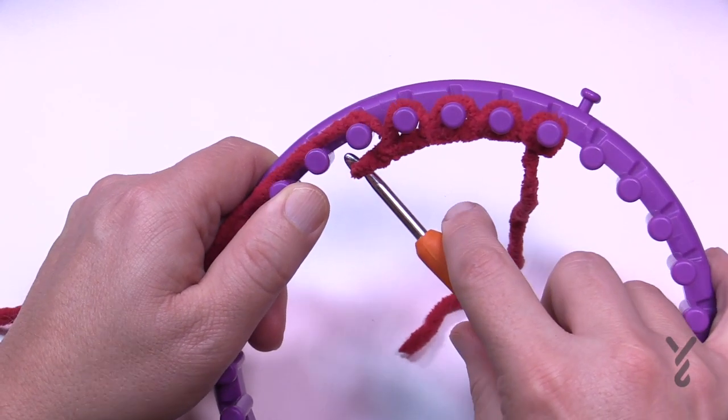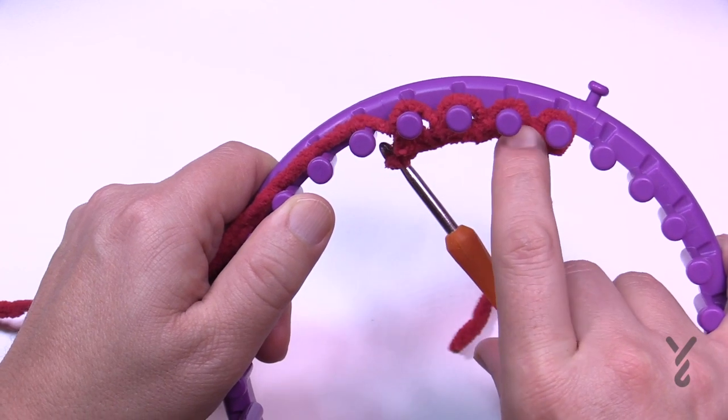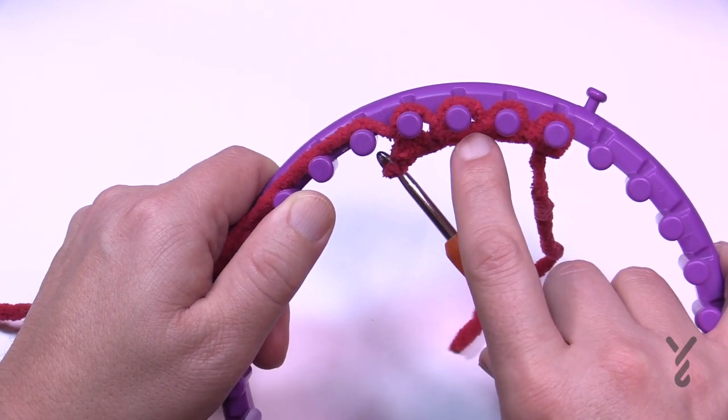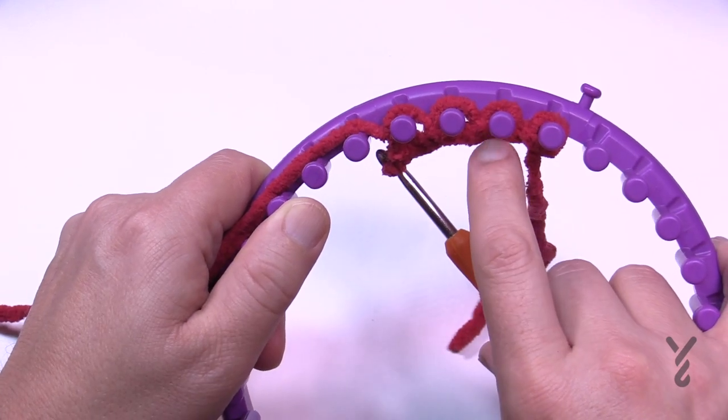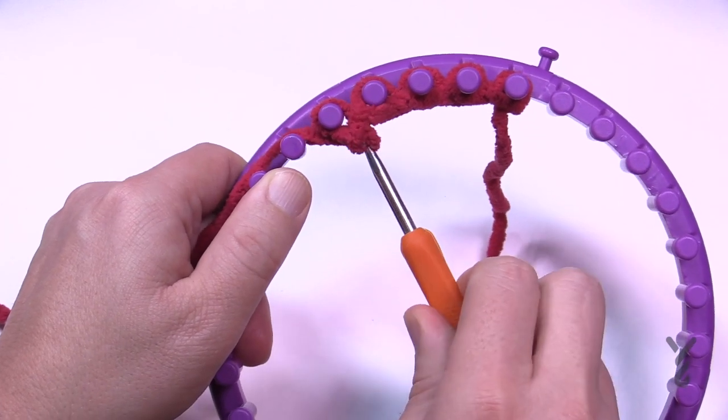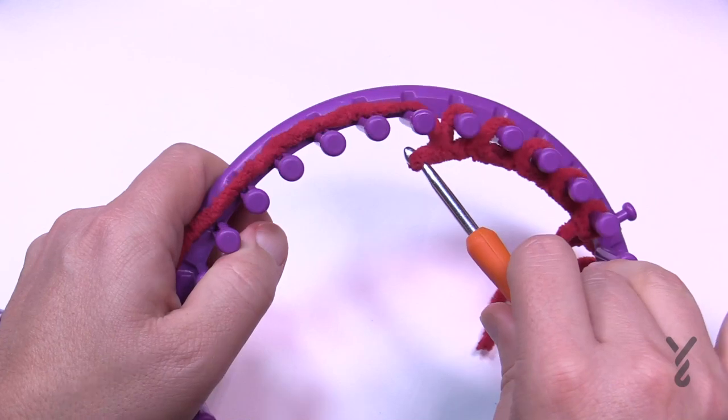What you're doing is you're officially casting on, so this is completely locked the first time. Unlike e-wrapping when you cast on, where you have to wrap around twice and then toss the one over the top, this is happening all at the exact same time. You're wrapping it and securing it with the chain cast on.